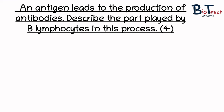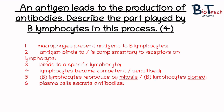The next question is also for four marks: an antigen leads to the production of antibodies — describe the part played by B-cells in this process. Pause the video now to give this a go. A good answer would start by saying macrophages present antigens to B-cells and the antigen binds to the B-cell if it is complementary. The lymphocytes then become activated and proliferation takes place through clonal selection and mitosis. Finally, mention that plasma cells secrete antibodies, which is essentially what the question is about.